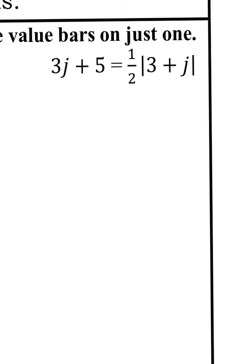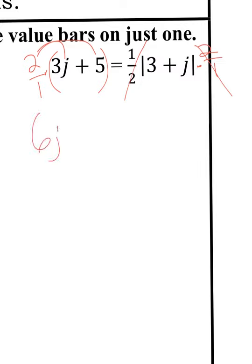One more example: I have 3j plus 5 equals 1 half times the absolute value of 3 plus j. I don't like distributing fractions, so I'll flip it and multiply 2 over 1 to the other side. Remember to distribute — it's 2 over 1 times 3j and 2 over 1 times 5, giving me 6j plus 10 equals the absolute value of 3 plus j.